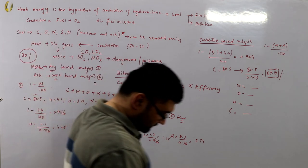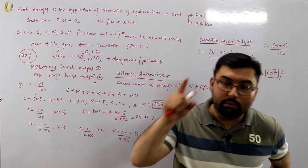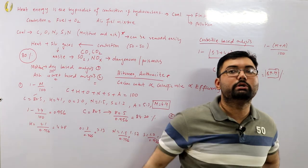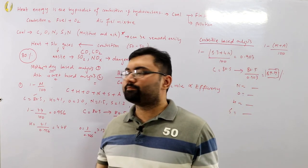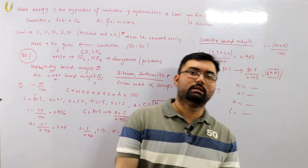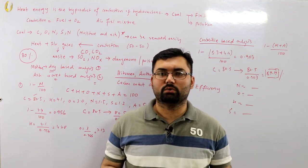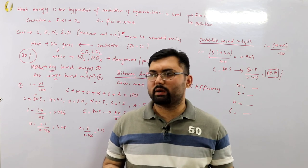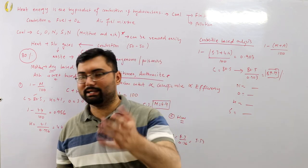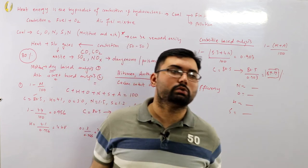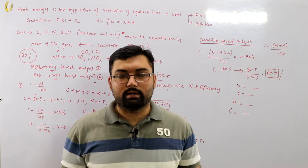I'm a little tired now so I'll finish this video here. In the next videos we'll cover calorific values with examples. Calorific value is the amount of heat produced per unit composition during combustion. See you in the next video — take care, goodbye.